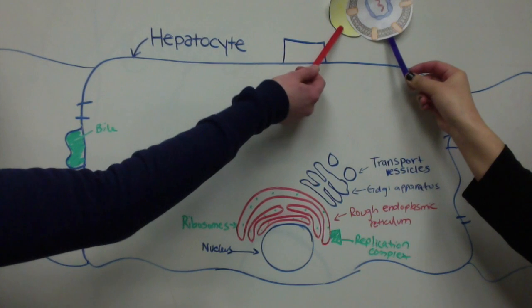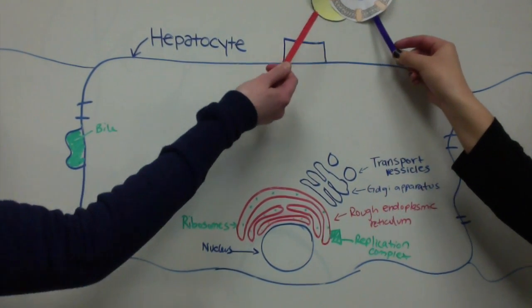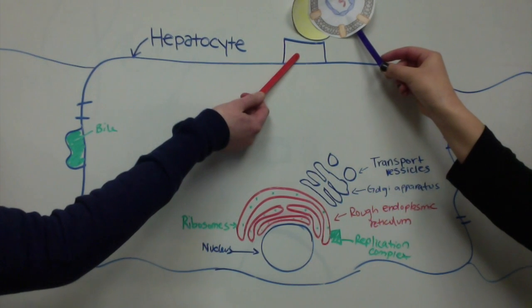HCV has the help of lipoproteins to enter the liver cells. HCV and lipoprotein attach to the liver cell by binding to specific receptors.